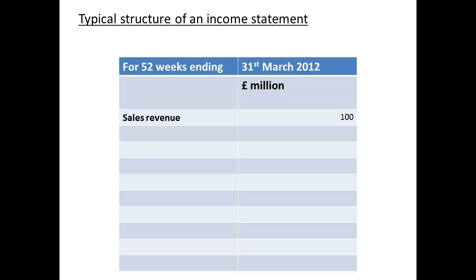Let us consider the structure of the income statement. We start by considering the total sales revenue — in this case we shall say it was 100 million. Now we enter the figure for the cost of sales, which we shall say was 60 million. We are now in a position to determine the gross profit: we subtract cost of sales from sales revenue to obtain a figure of 40 million.